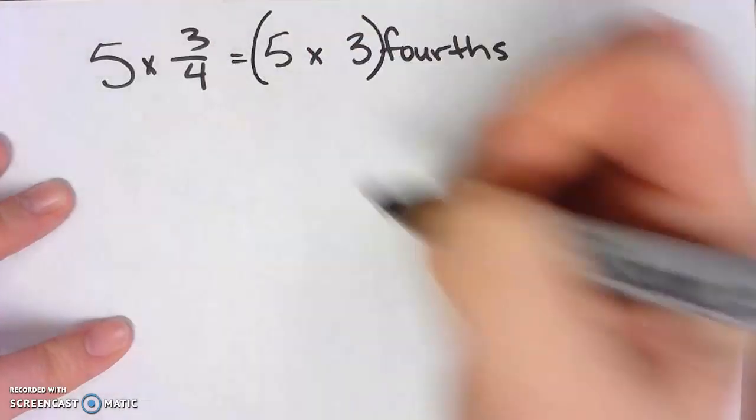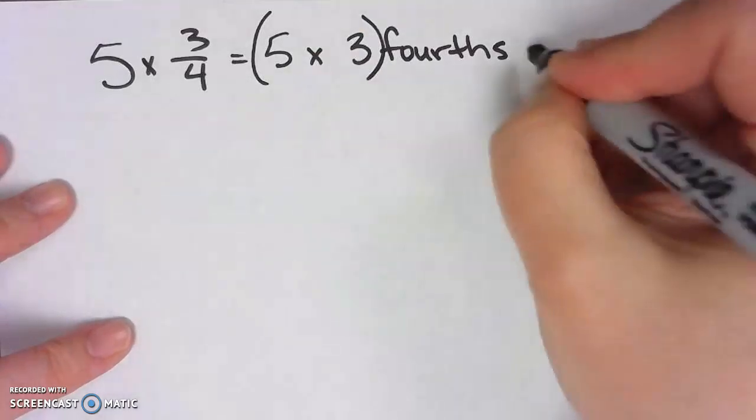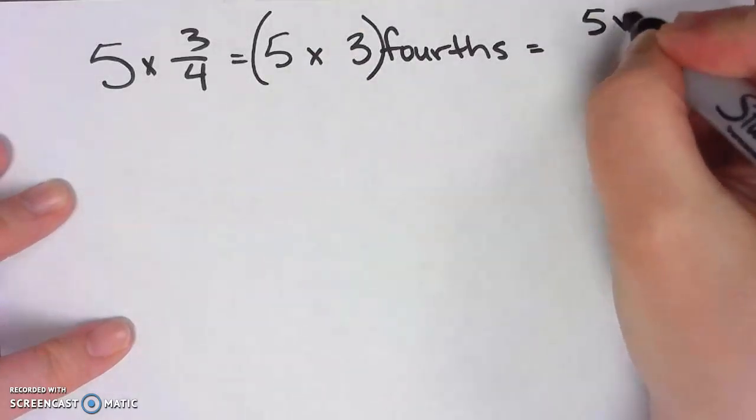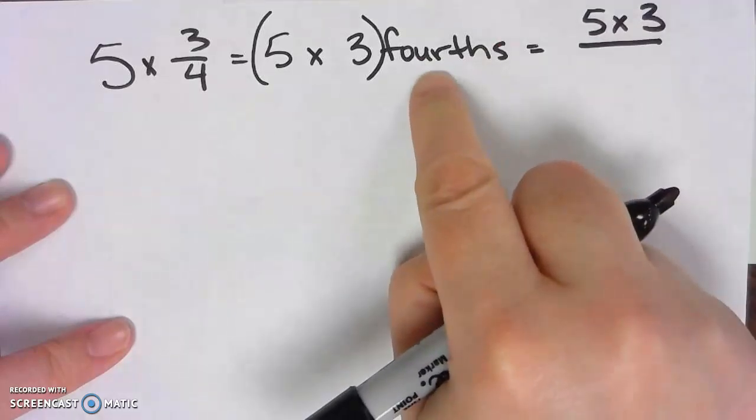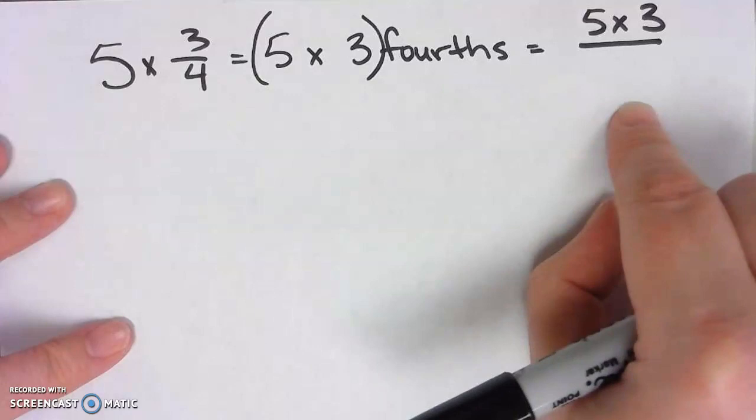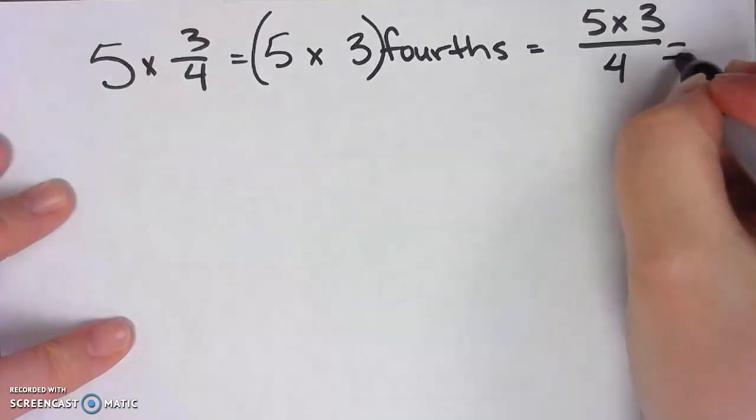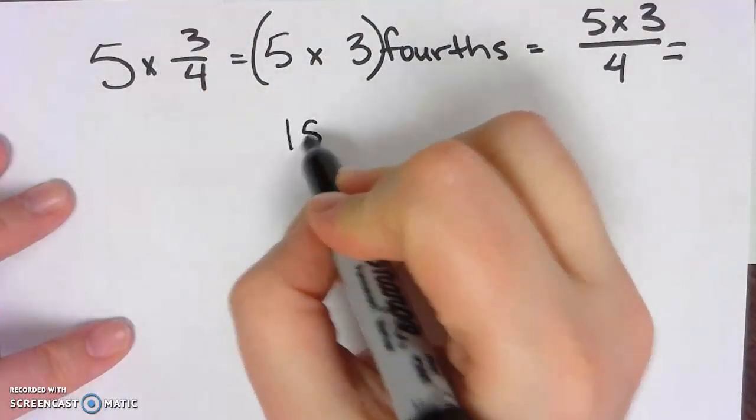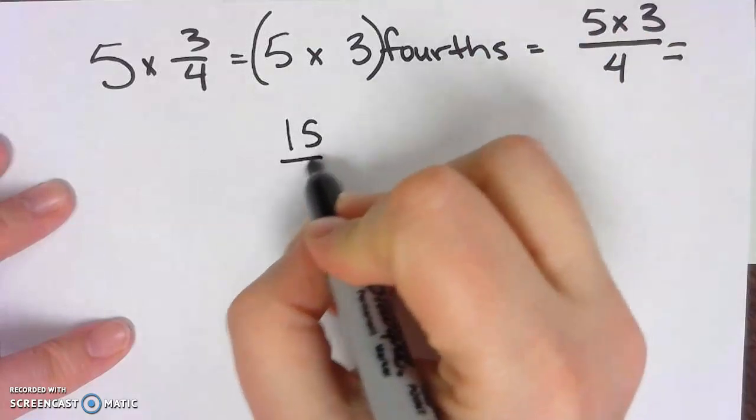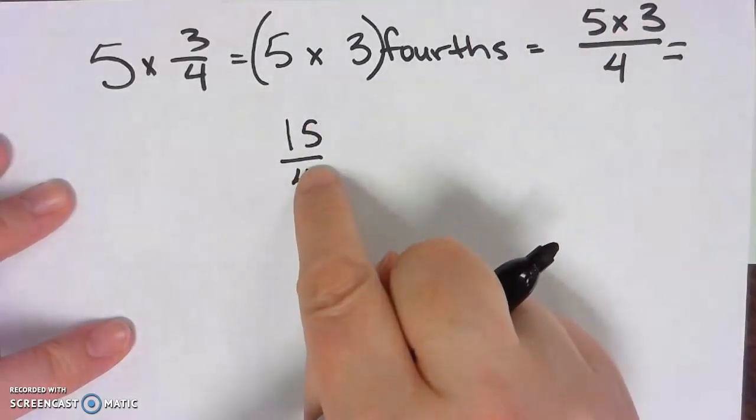So I can write that as 5 times 3, and instead of using fourths in written form, I'm going to use fourths in numeric form: fourths. So this equals, well, 5 times 3 equals 15, and then my denominator stays the same. So it becomes 15/4.